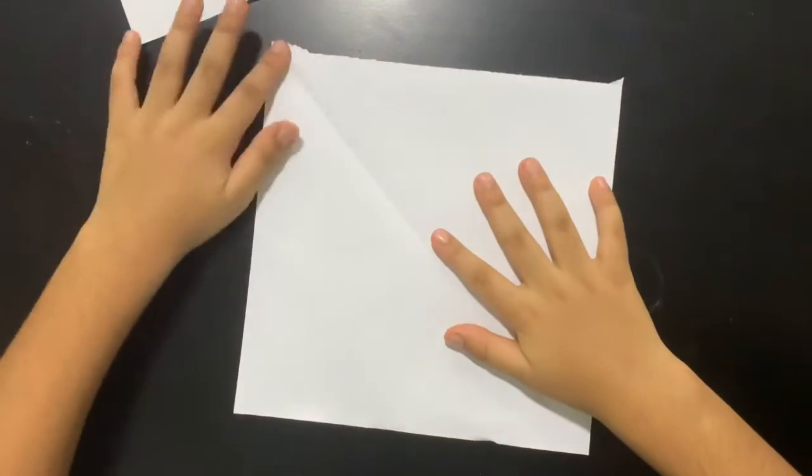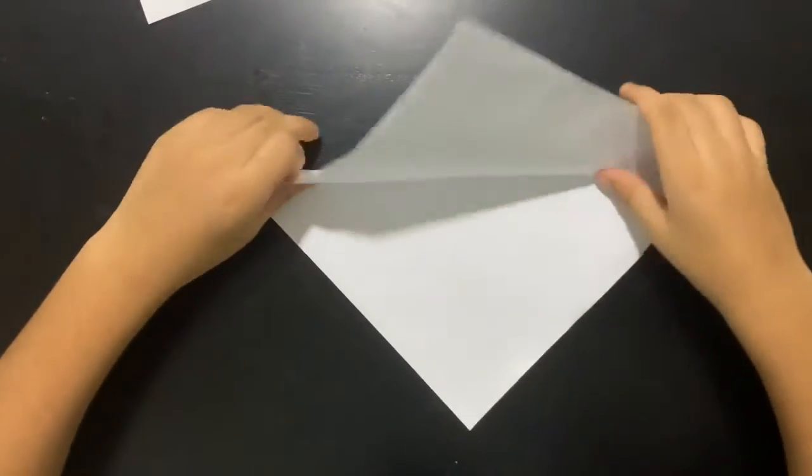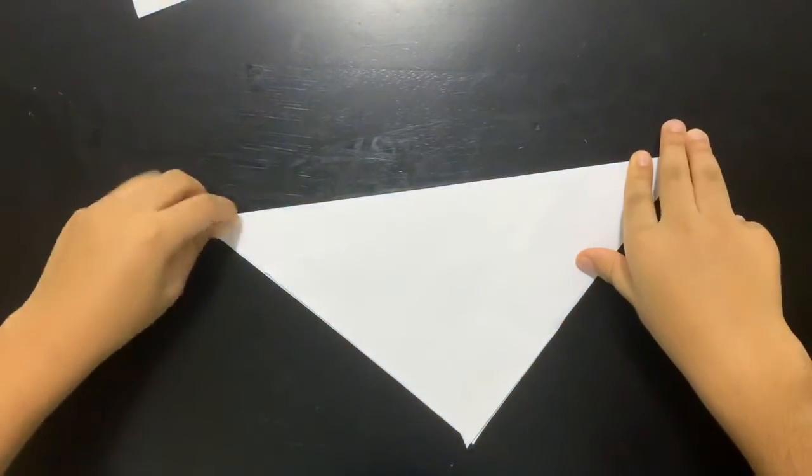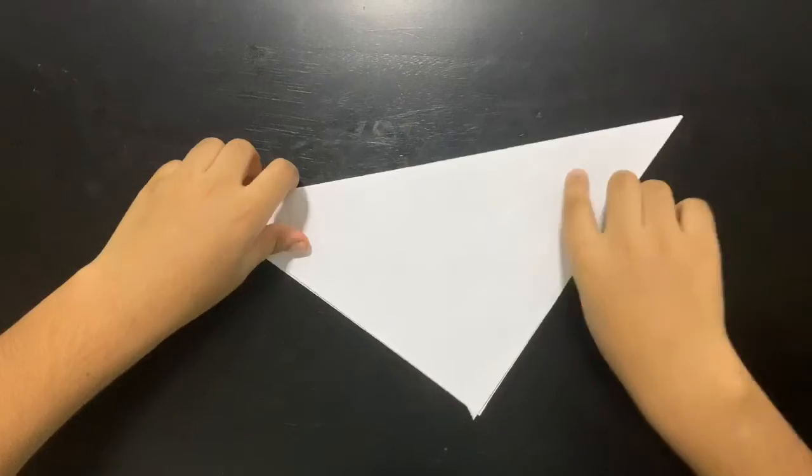So when you're done with your square, let's come on! So first fold the square in half. Like this. Then turn it over.